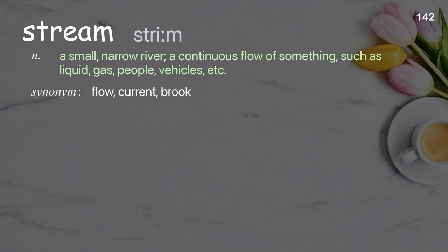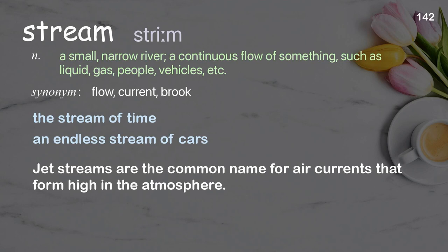Stream: a small, narrow river; a continuous flow of something, such as liquid, gas, people, vehicles, etc. Examples: the stream of time, an endless stream of cars. Jet streams are the common name for air currents that form high in the atmosphere.